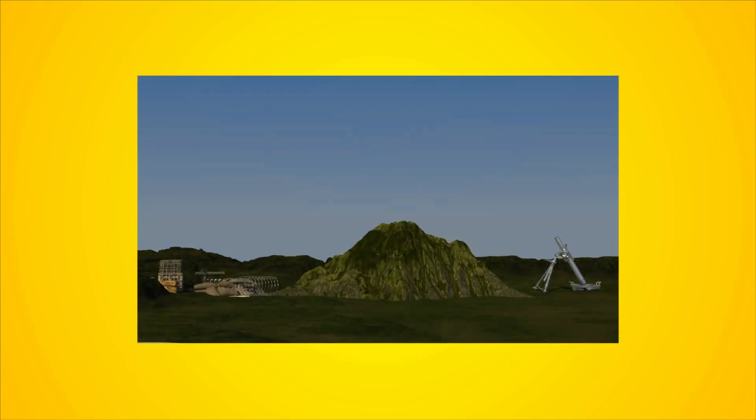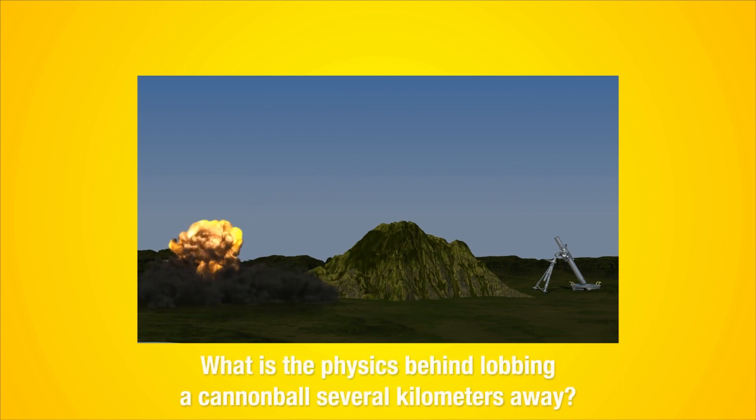Have you ever wondered how gunner teams for cannon or mortar equipment are able to target things several kilometers away? They do it by lobbing a projectile rather than targeting it directly. This whole activity is pretty amazing, but the underlying principles and calculations are pretty straightforward. Let's see how it's done.